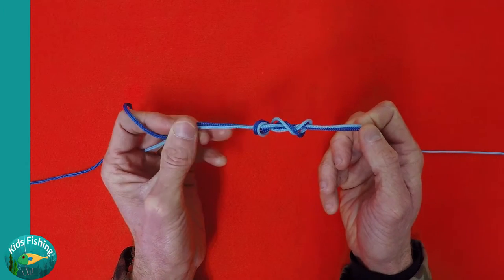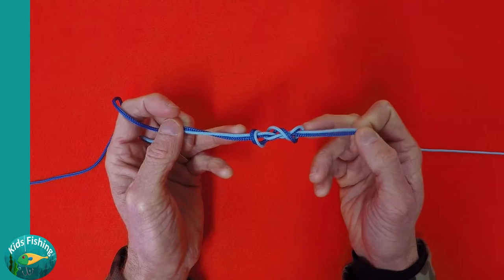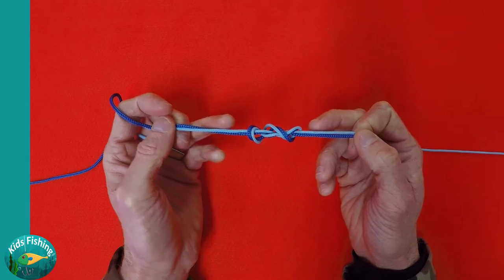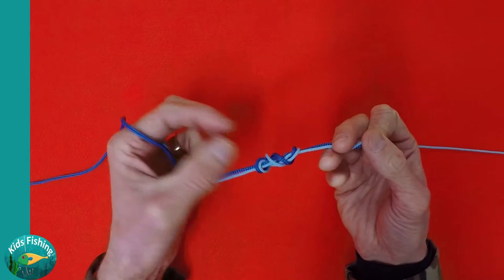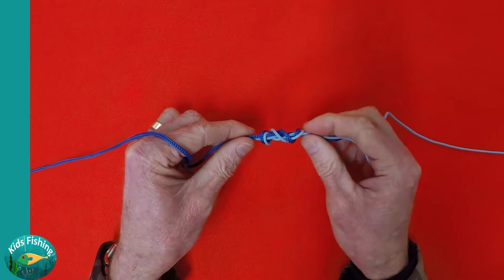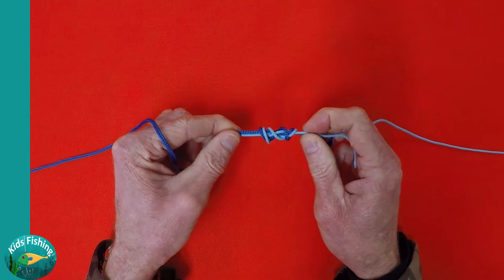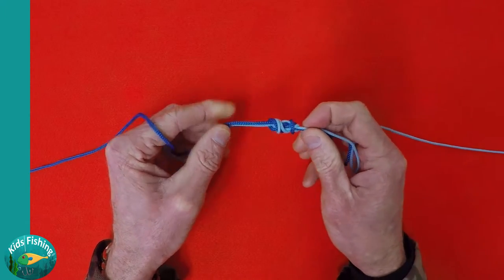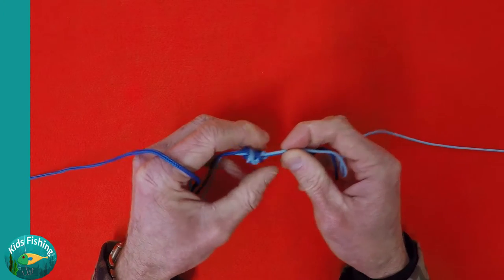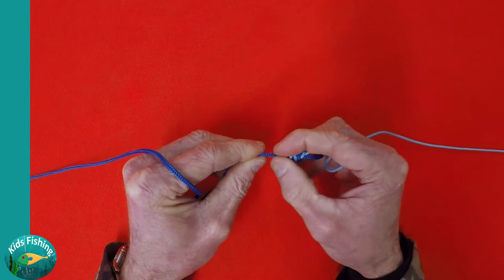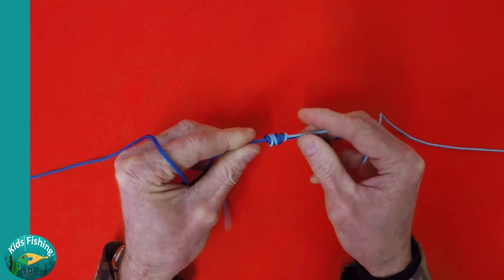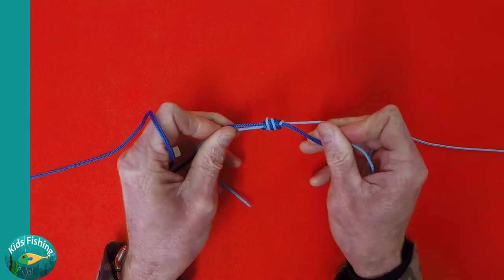The other thing to think about, and it's very important, is if you're doing this with nylon or fluorocarbon you need to wet the knot before you pull it tight. That's very important because the friction of pulling this knot tight will actually melt the line otherwise and obviously create a lot of weaknesses. So it's very important that you actually wet the knot before you cinch it tight.